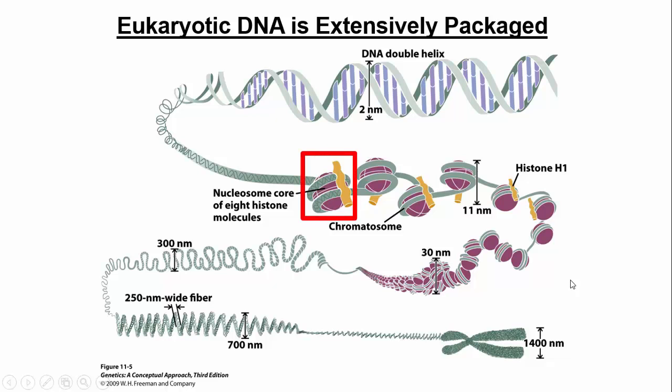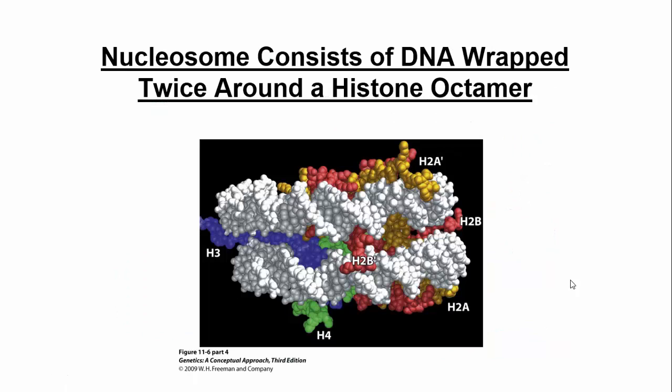Let's zoom in further into the nucleosome core. The core is composed of four different types of histone proteins, and each type has two of those histones in the nucleosome. So four types, two of each, gives you a histone octamer — octo in Greek means eight — so we have eight total histones.